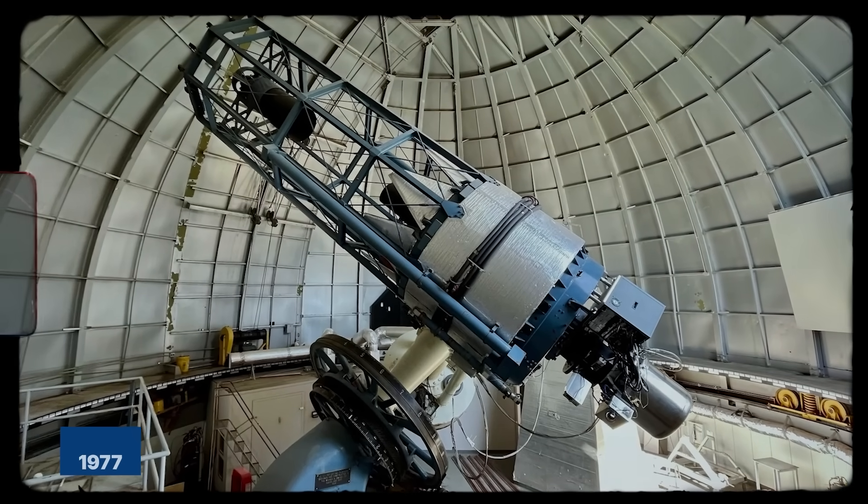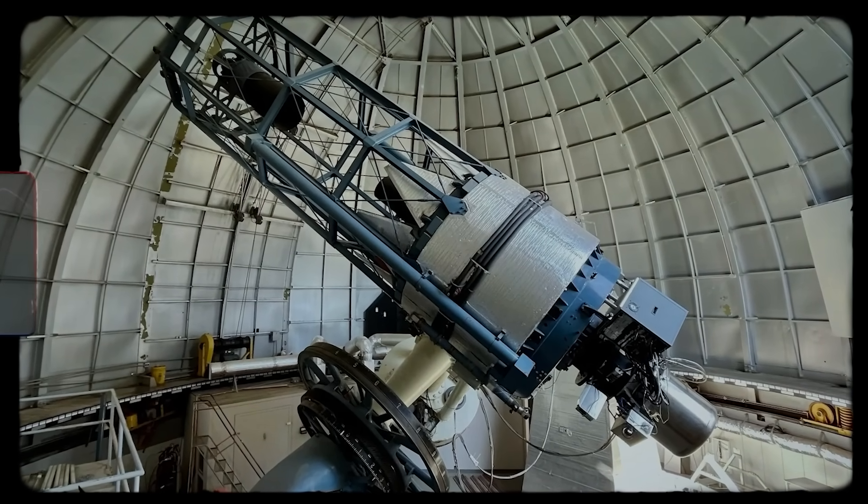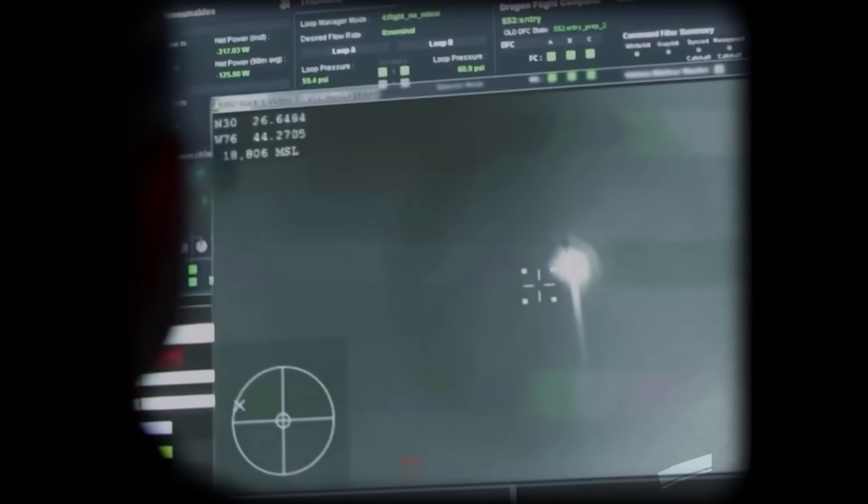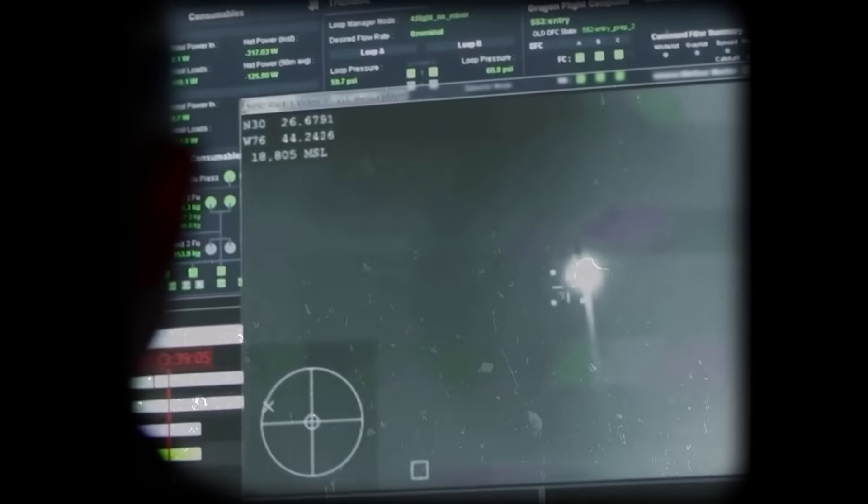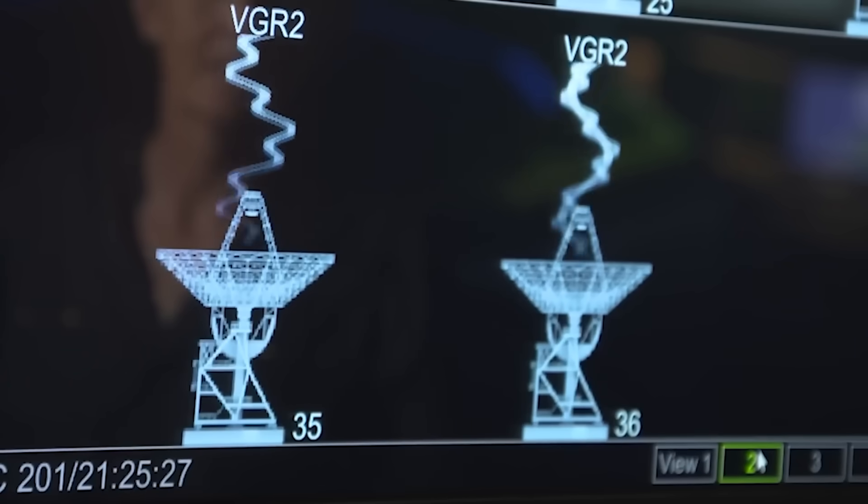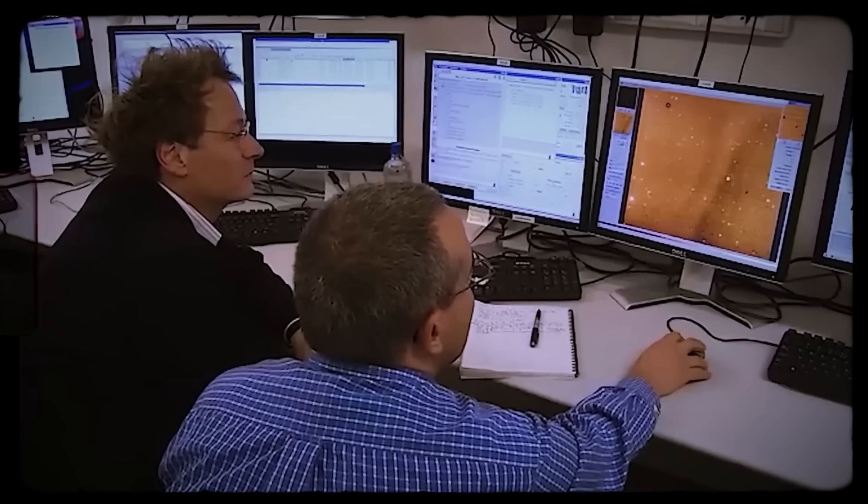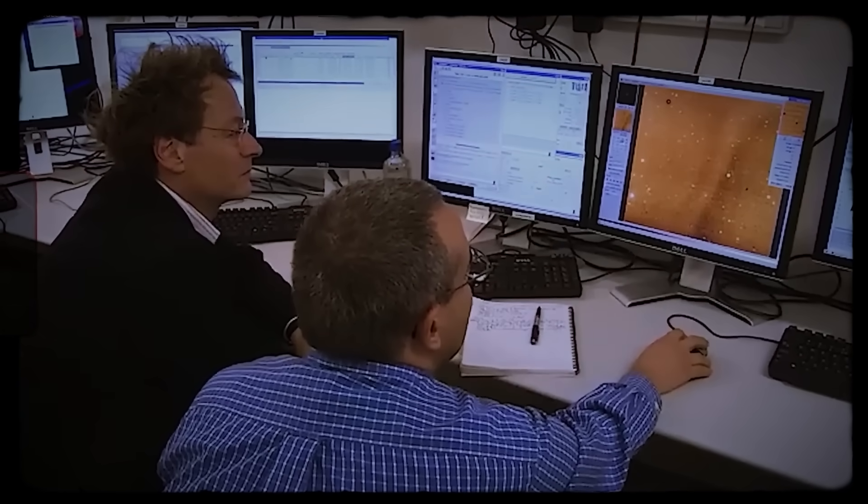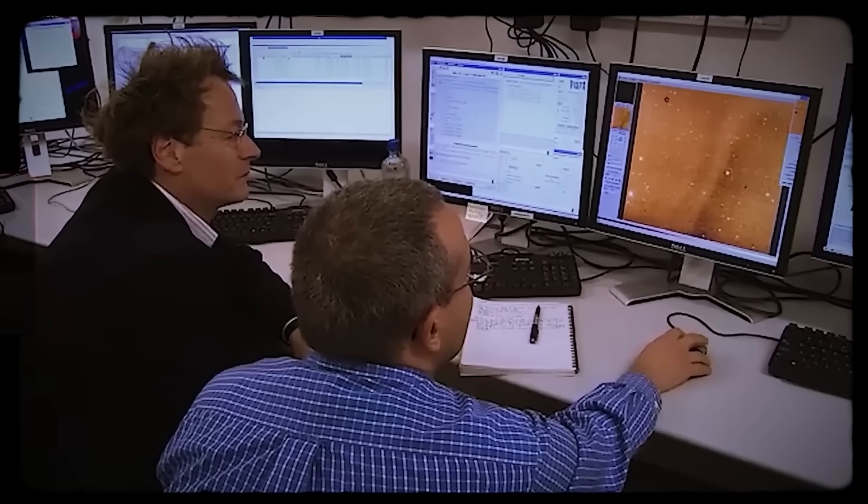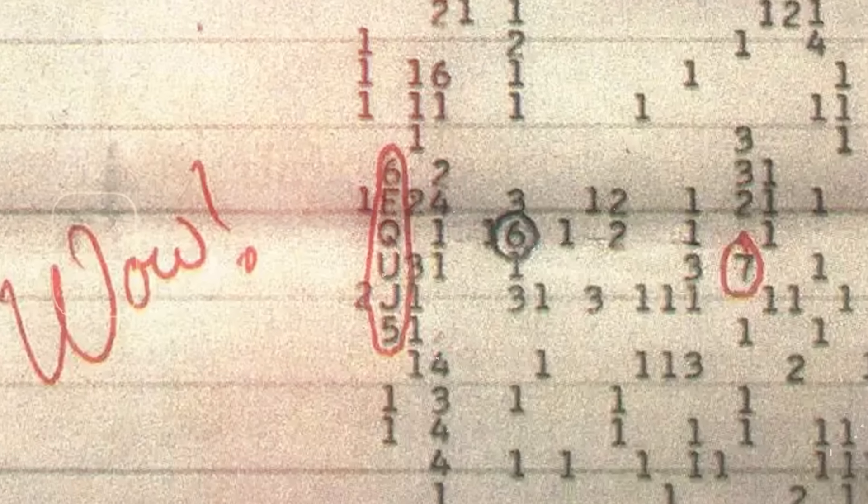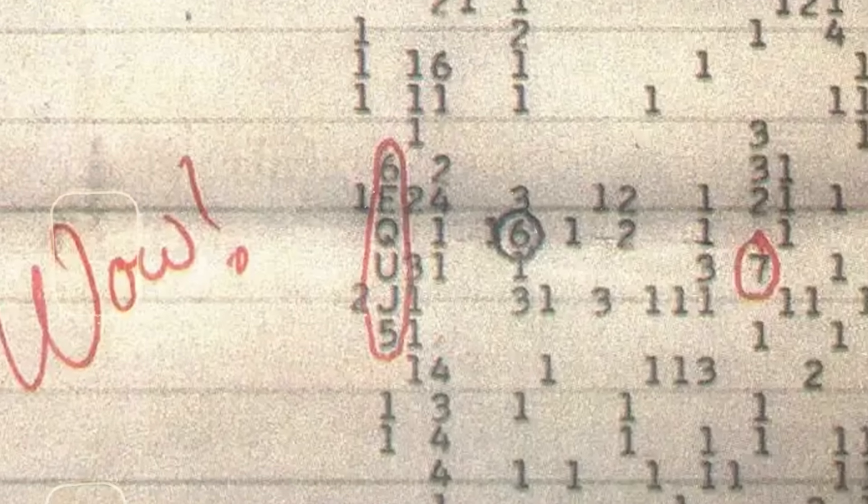In 1977, at the Big Ear Radio Telescope in Ohio, a researcher named Jerry Eamon recorded something he could hardly believe. A powerful, narrow-band radio signal from deep space, lasting 72 seconds. So perfect, so structured, that he circled it on the printout and wrote a single word beside it: WOW. The signal never repeated, never returned. For decades, it stood as one of the greatest mysteries in the search for extraterrestrial intelligence.